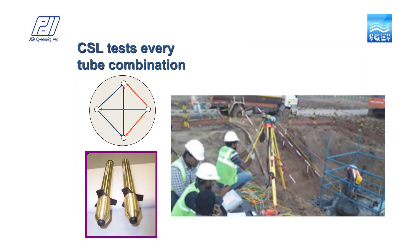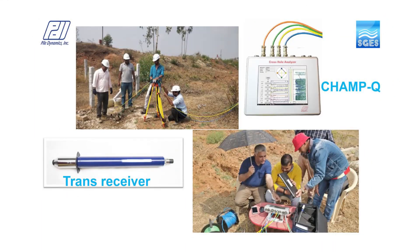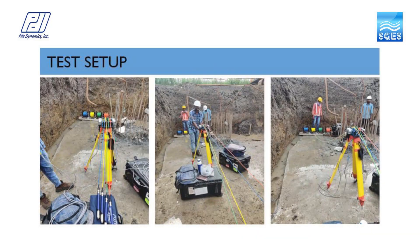Tests shall be conducted in all possible combinations. For example, if you have four access tubes, you need to scan two major diagonals and four perimeters. The latest champion model has transceivers which can both emit and receive sonic waves. Therefore, four transceivers can be lowered onto the four access tubes simultaneously, and in one pull all possible combinations could be tested, increasing efficiency by almost six times.